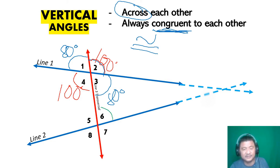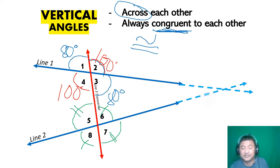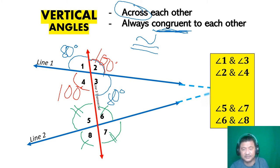On the other side: angle six is congruent to angle eight, and angle seven is congruent to angle five. Those tick marks mean they are congruent to each other.